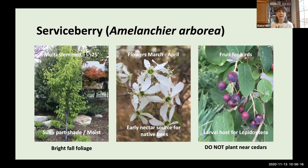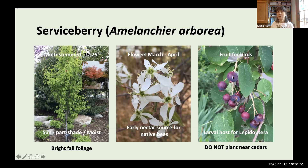Serviceberry, Amelanchier arborea, is a multi-stem tree about 15 to 25 feet high, growing in sun to part shade in moist conditions — truly a four-season plant. It has lovely flowers in March to April as an important early nectar source for native bees, fruit enjoyed by birds and usable in cooking, serves as a larval host for Lepidoptera, has gorgeous bright orange fall color, and attractive mottled bark in winter. One important note: this tree is an alternate host for cedar rust disease — avoid planting it near cedar trees or cedar ground covers.